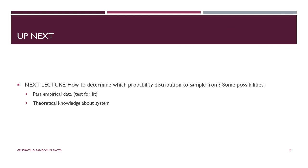What do we use all of this for in simulation? We use it to generate values that serve as input to the simulation — for example, inter-arrival times if we have customers coming into a bank, or the time until a machine goes out of service in a machine shop. All of this assumes we know the distribution we want to sample from, and that's a whole other lecture — which is coming up next.